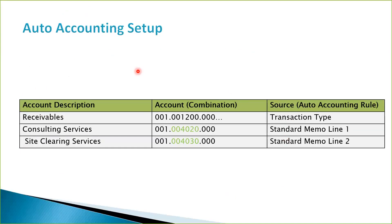When we go to enter our transactions and go to the lines, when auto accounting is not set up, we have to go and manually enter the distributions — the GL accounts for our lines. But with auto accounting, we want to overcome that challenge such that we can have those GL accounts populated for us, so that we don't have to go to the distributions for the lines to enter them manually.